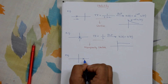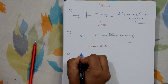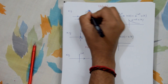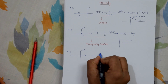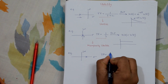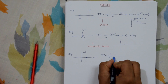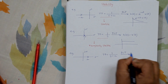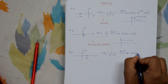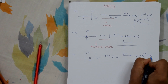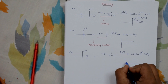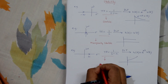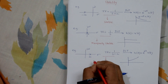Now the pole is on the right-hand side of the s-plane, where this is the jω axis and this is the real axis. The transfer function is 1 by (s − a), taking this point as a. The inverse Laplace transform gives e^(at) · u(t). The plot of this function is exponentially increasing, therefore the pole-zero plot is an unstable one.